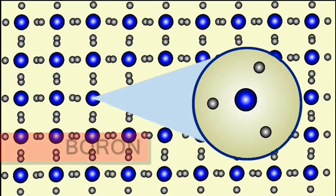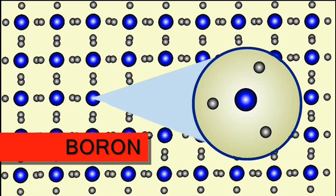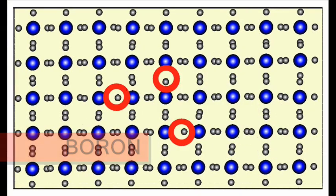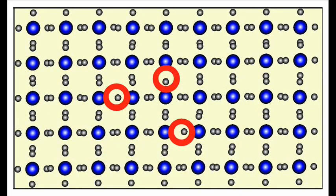Also by adding trivalent elements such as boron, this creates holes. This is called P-type semiconductor.